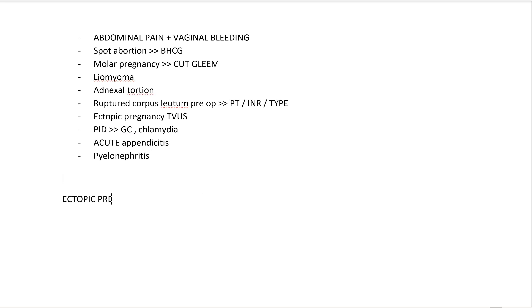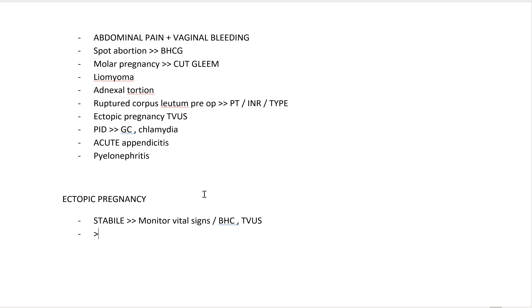Once ectopic pregnancy is confirmed, management depends on patient stability. If the patient is stable, send them to the hospital, monitor vital signs, and do serial beta HCG. Then look at the transvaginal ultrasound combined with the beta HCG. If beta HCG is more than 1500 and there is an intrauterine pregnancy on transvaginal ultrasound, treat as an abnormal intrauterine pregnancy.